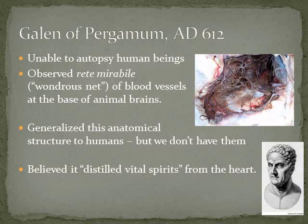What he observed was a wondrous net of blood vessels at the base of animal brains, particularly pig brains. This is a picture of a capillary net. Humans have something similar, but it's not the same structure. This is an example of how Galen set the tone for medicine for a millennia, even though most of his wisdom was based on studies with animals rather than humans.